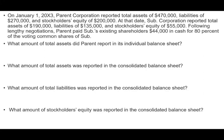On January 1st, 2003, the parent company — usually called P to emphasize it's the parent — reported total assets of $470,000, liabilities of $270,000, and stockholders' equity of $200,000, because equity plus liabilities should equal assets. At that date, the sub-corporation reported total assets of $190,000 and total liabilities of $135,000. On the exam they may not give you the equity, but you would know the equity is $55,000.